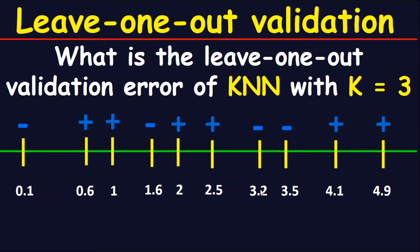For point 3.2, the closest three points are 2.5, 3.5, and 4.1: positive, negative, positive. The majority is positive but this point is negative, so this is an error. For point 3.5, the closest three points are 3.2, 4.1, and 2.5: positive, negative, positive. Again the majority is positive but the original point is negative, so this is an error.